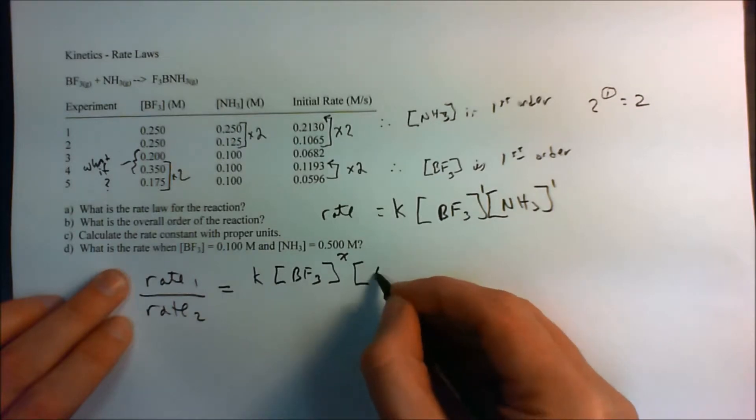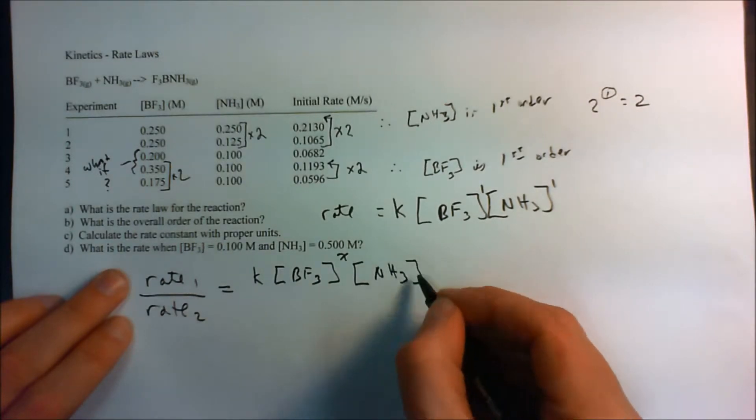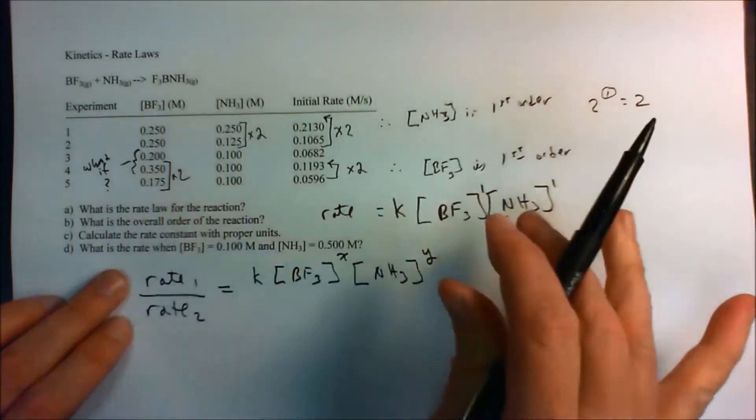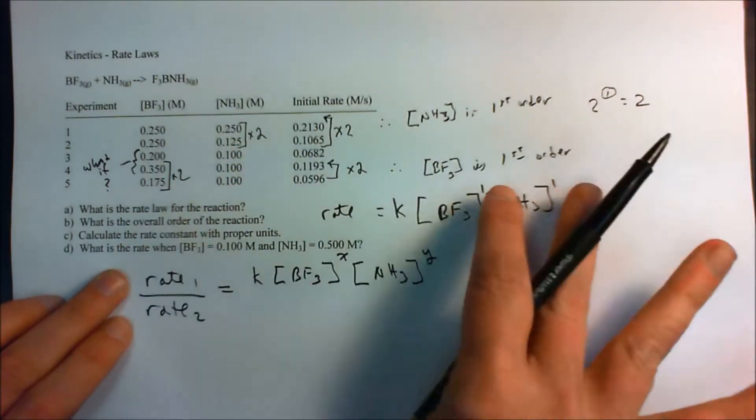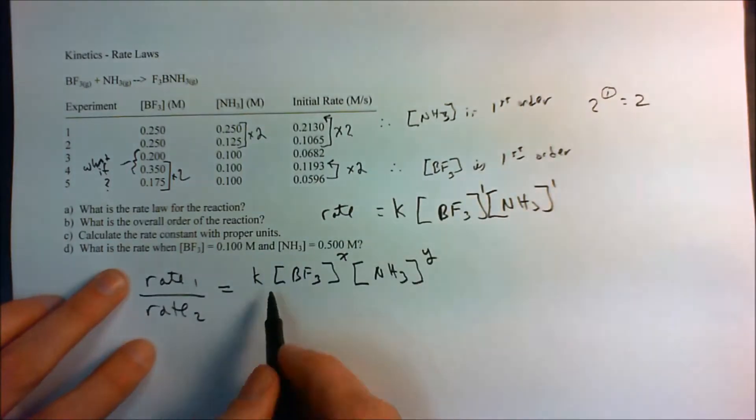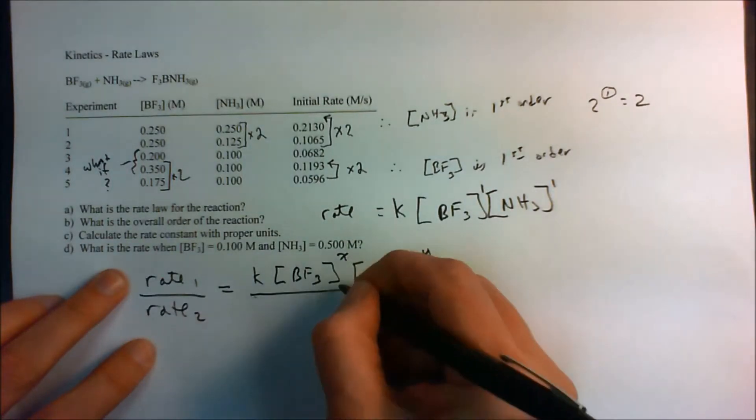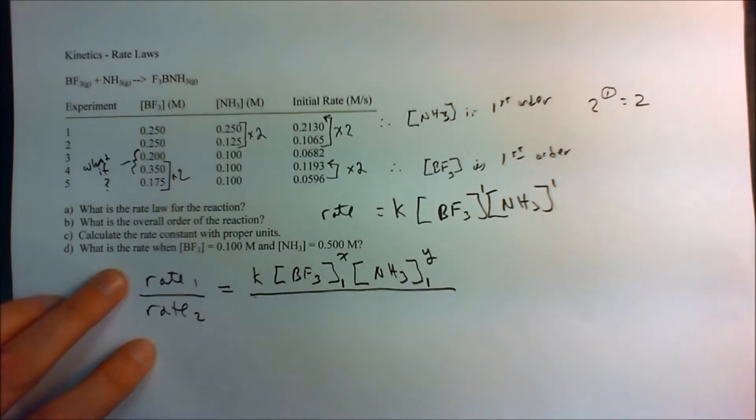You have the rate of your first concentration, and then you have your BF3 to some arbitrary power, and you have your concentration of ammonia to some arbitrary power. Remember, this is assuming we didn't have this information over here, times 2, times 2. So we don't know this yet. And this is for concentration 1 and concentration 1.